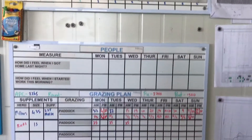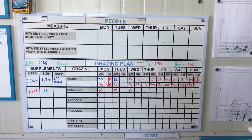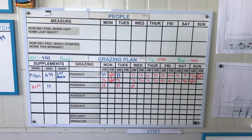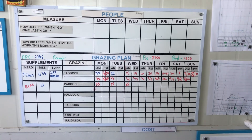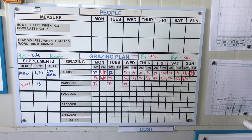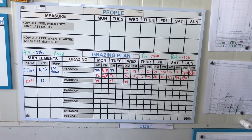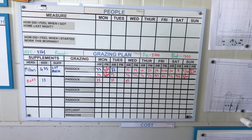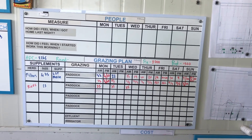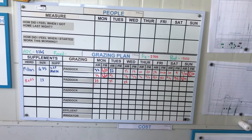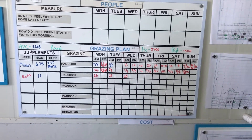Then we've got another section here which is around people and our grazing plan. We put this people section up and the idea was to put smiley faces and so forth. We haven't really used it, so what we're going to do now is change that to suit what the team actually needs, and that's the great thing about this process — you don't have to make it perfect first time around. It's going to be an evolving thing.